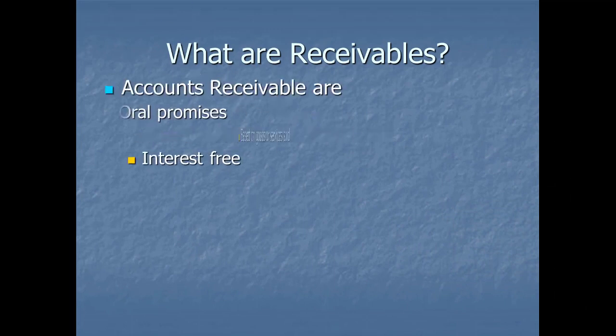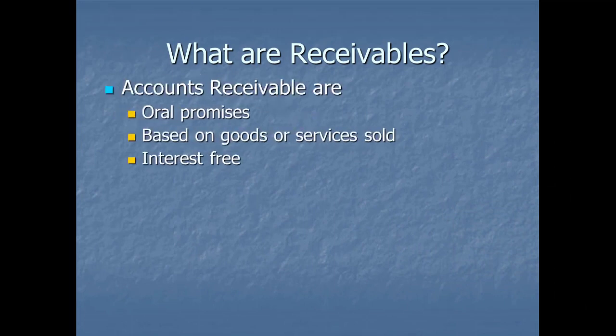We have two options for receivables. One is accounts receivable. These are oral promises — not governed by an in-depth written agreement — but an agreement between two parties, usually between a company and their customers, that the customers will repay what they purchased later on. This started as a grace period: if I sell to you, you still have to turn around and sell it yourself, so I sell to you on credit.